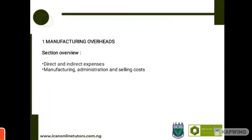What I mean by 'directly attributable' is that direct expenses are incurred because we want to produce this particular product. Had this product not been produced, we would not incur this particular type of expense. Manufacturing costs refers to all the costs incurred in the process of manufacturing that particular item.